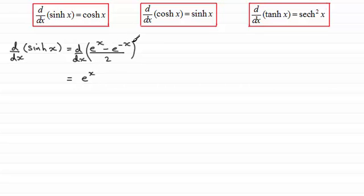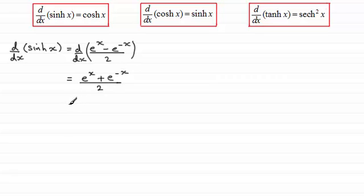Differentiating e to the x gives e to the x, and differentiating minus e to the minus x gives plus e to the power minus x, and we divide this result by 2. Hopefully you recognise what this is — it's the definition for cosh(x). So that's a nice simple proof.